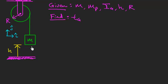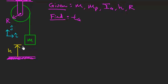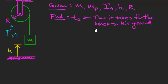Suppose we have a block with mass m. There's a string attached to this block, and the string comes up and is wrapped around a cylinder — I'm going to call it a spool, or a pulley. The pulley has a radius r and mass mp, and the moment of inertia of this spool about the center I'll call Ig. We're given the initial height h, and this thing is released from rest. What I want to find is tg — the time it takes for the block to hit the ground.